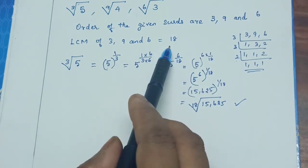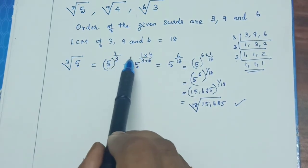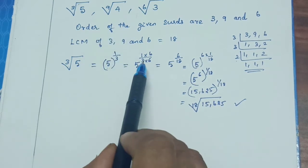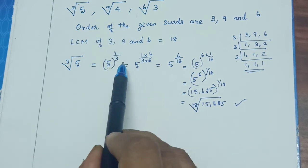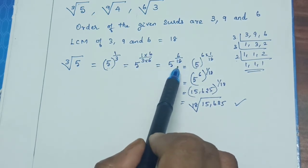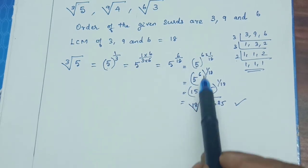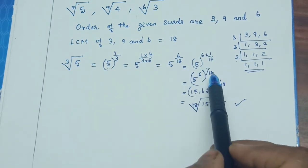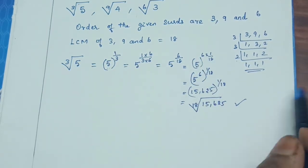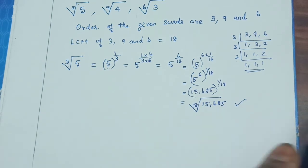To recap: the LCM of the orders is 18. For cube root of 5, we have 5 to the power 1 by 3. Convert all denominators to 18 — since 3 times 6 is 18, multiply by 6. This gives 5 to the power 6 by 18, so take 6 inside as the power of 5. The result is the 18th root of 15,625.